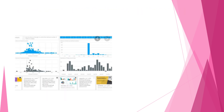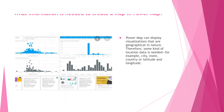What information is needed to create a map in PowerMap? PowerMap can display visualizations that are geographical in nature. Therefore, some kind of location data is needed — for example, city, state, country, or latitude and longitude.